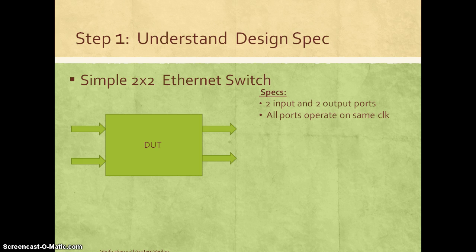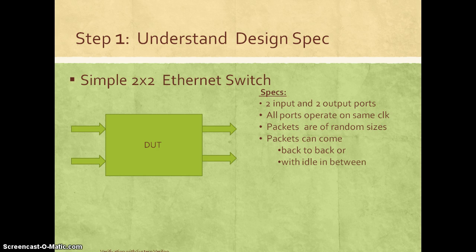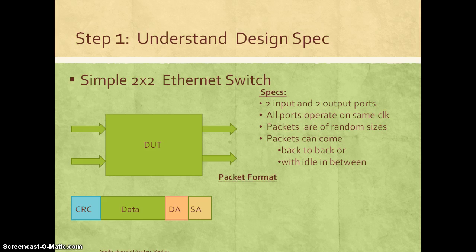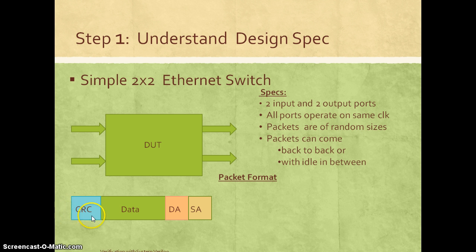In this case we have two input and output ports. All the ports operate on the same clock. The packets can be of random sizes. The packets can come back to back or they can come with five cycles in between. The specification will also capture details on what all the packet might look like. So the packet format, say for this design specification, has something like this: there is a source address, there is a destination address, there is a random data field, and they have a CRC computed across the whole packet.